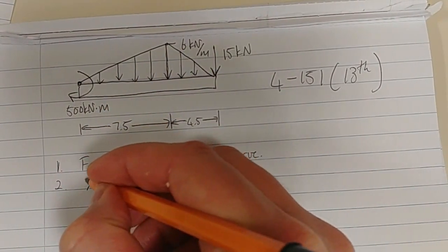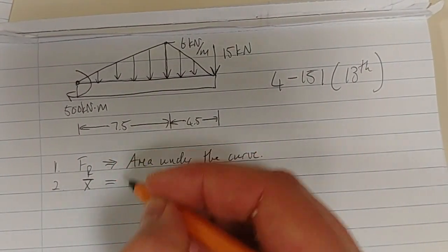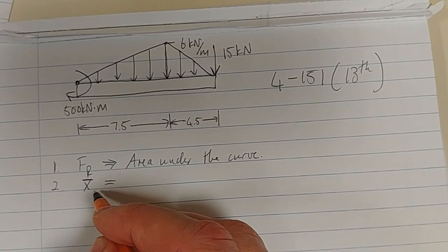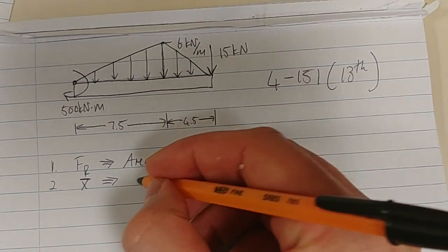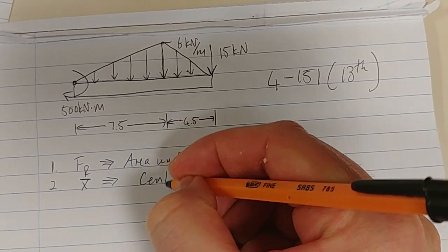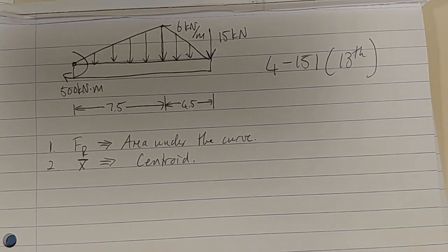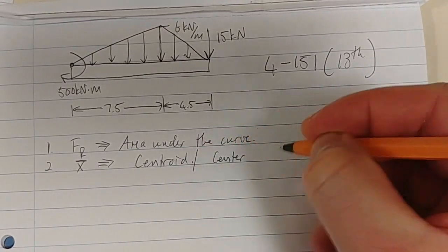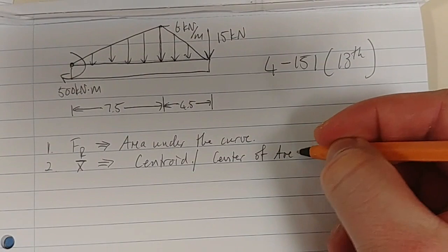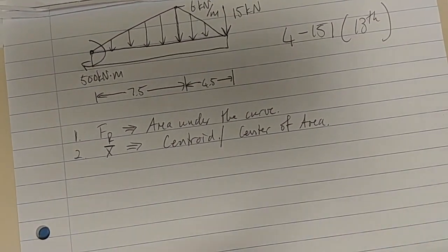The second thing is we need to determine where that position will be. The position of FR for that given area will always act through the centroid, the center of area. Hopefully that is very clear by now.